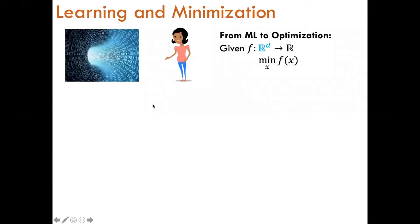Before we talk about min-max optimization, we'll first briefly look at the special case of minimization and its application to machine learning. Here we have a learner who's trying to use a data set to train a machine learning model in order to make predictions on the data. To do this, they have to choose some parameters x for the model, and the goal of the learner is to choose x in such a way that it minimizes the error f of x, which gives rise to a minimization problem.